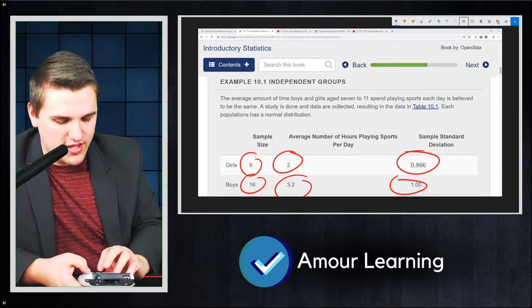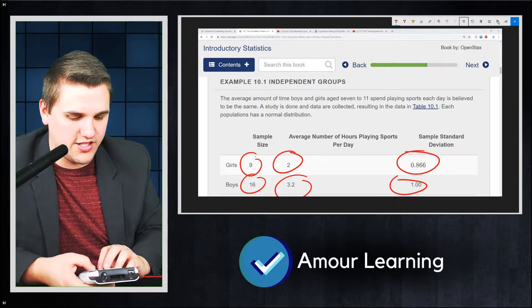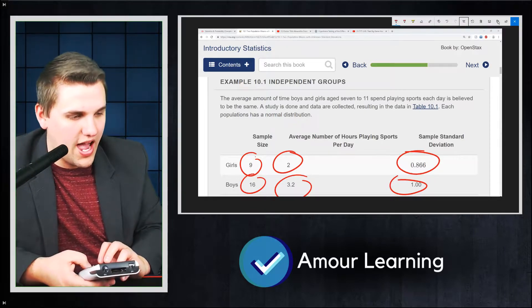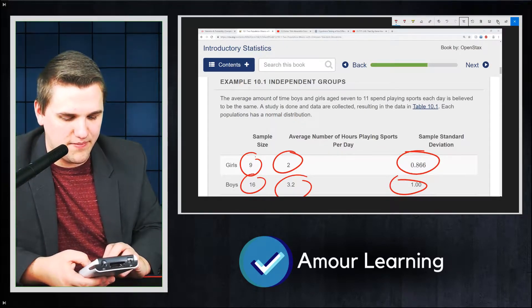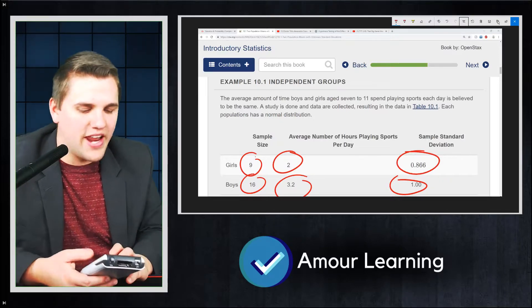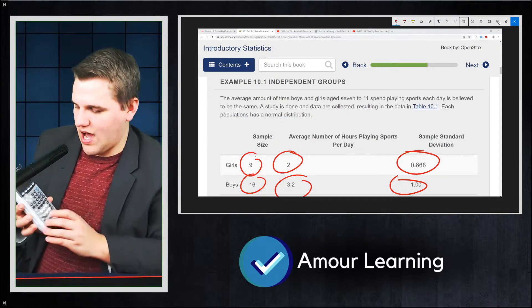For the second one, the second average was 3.2. The second standard deviation was 1, and the second sample size was 16. And then again, we're not going to pool, and we're going to calculate this.